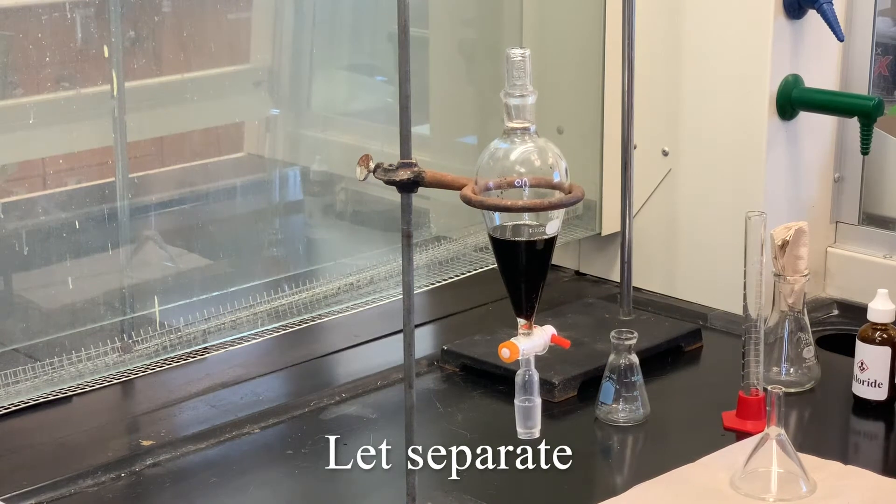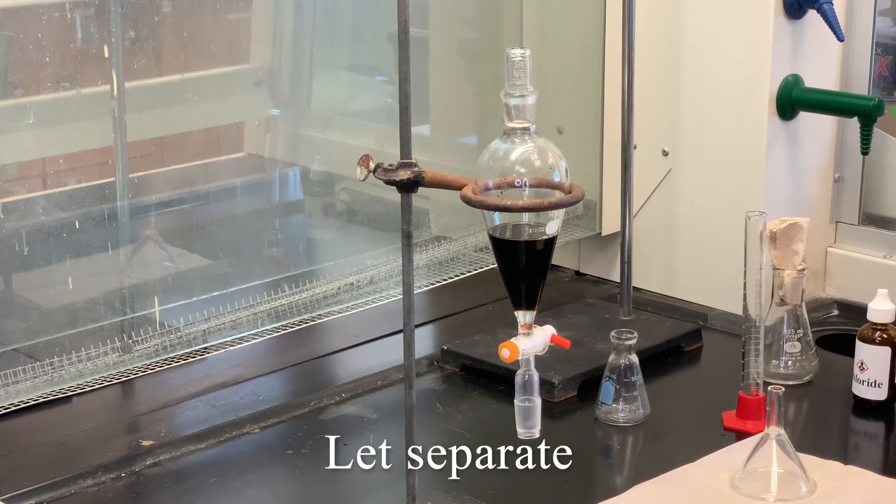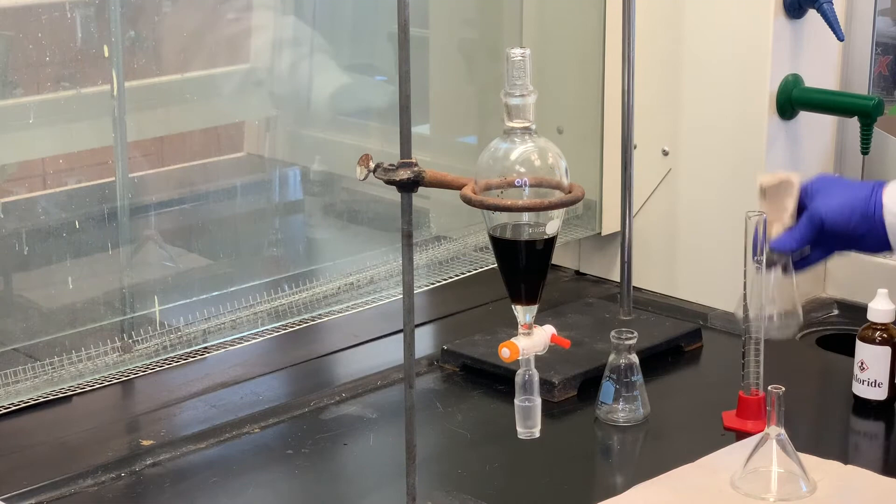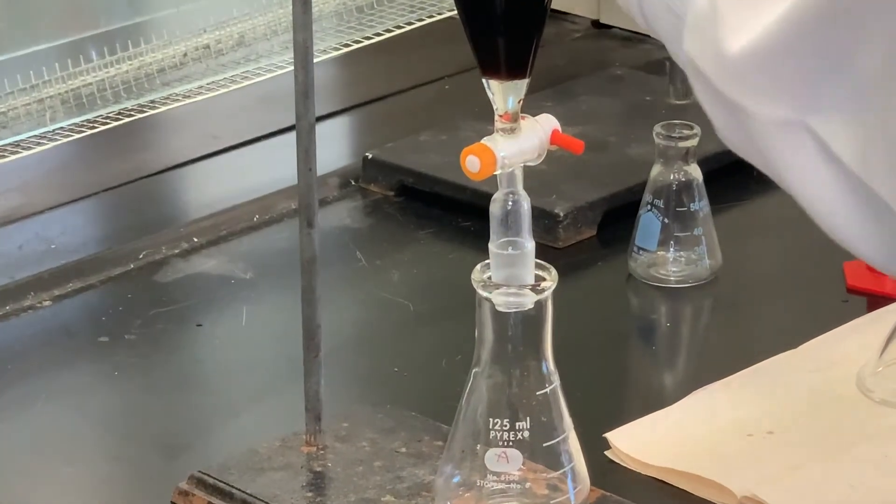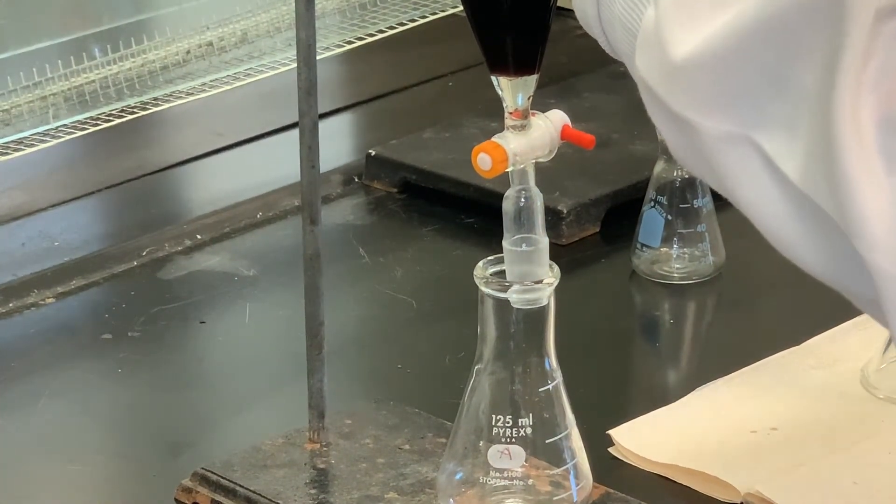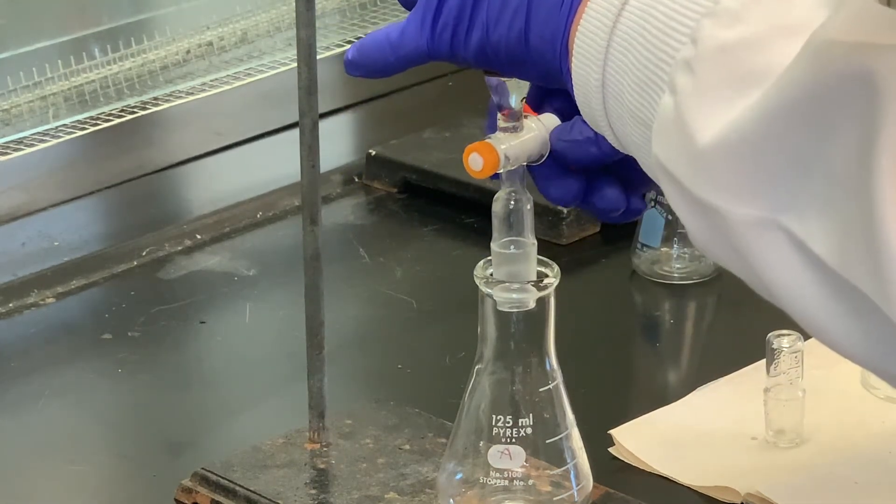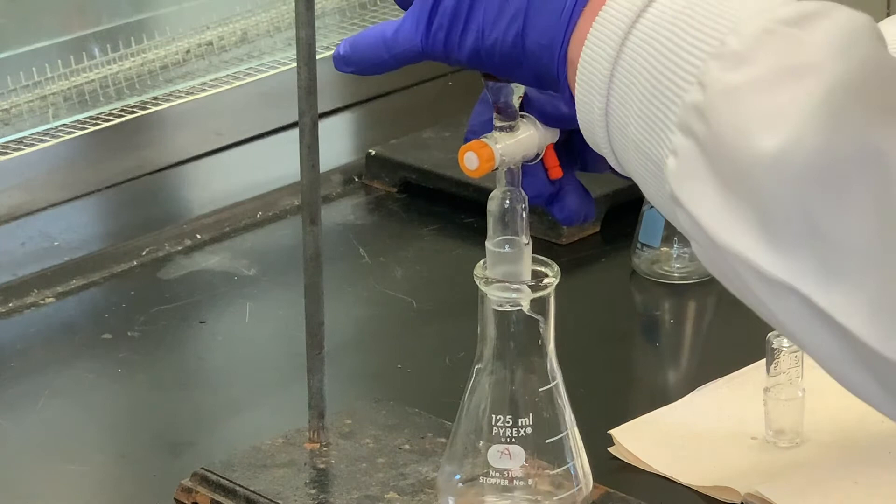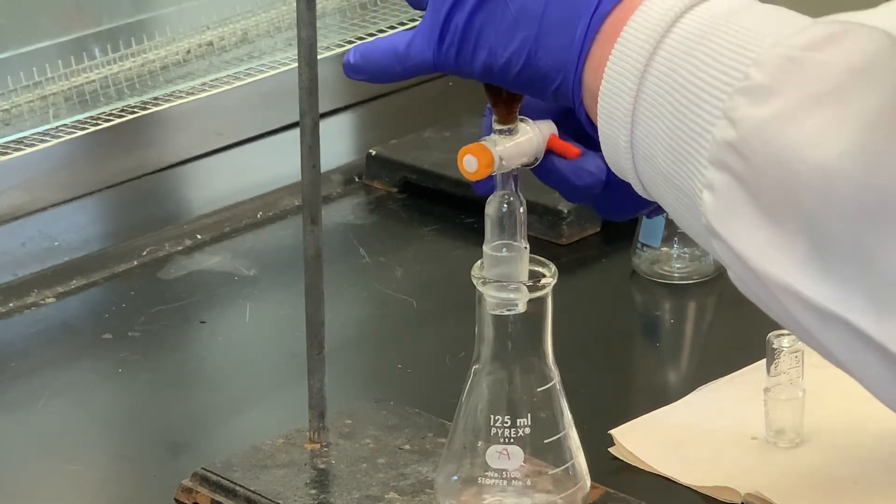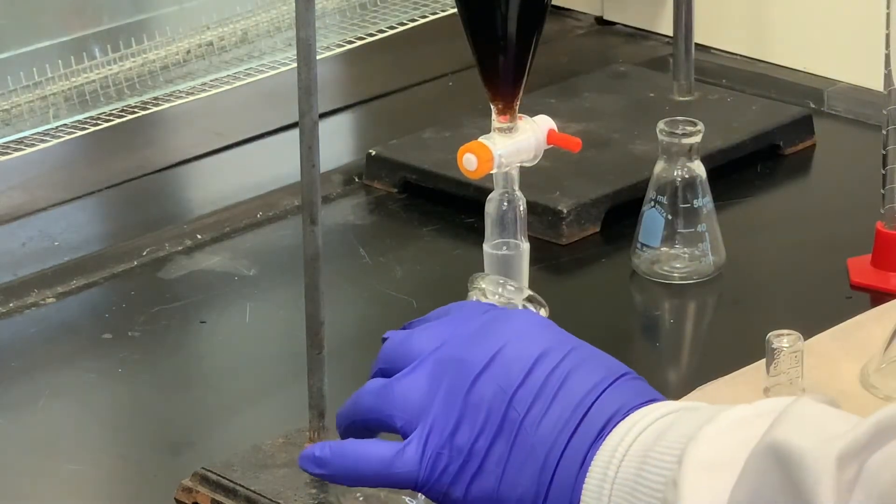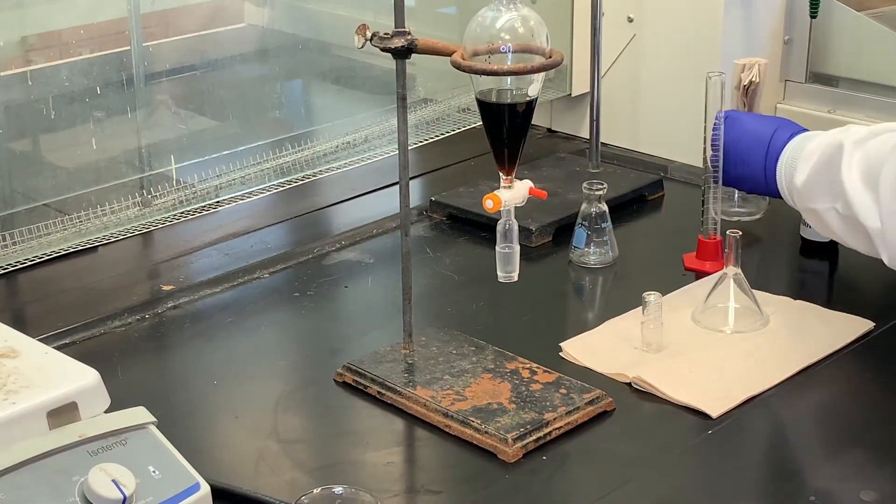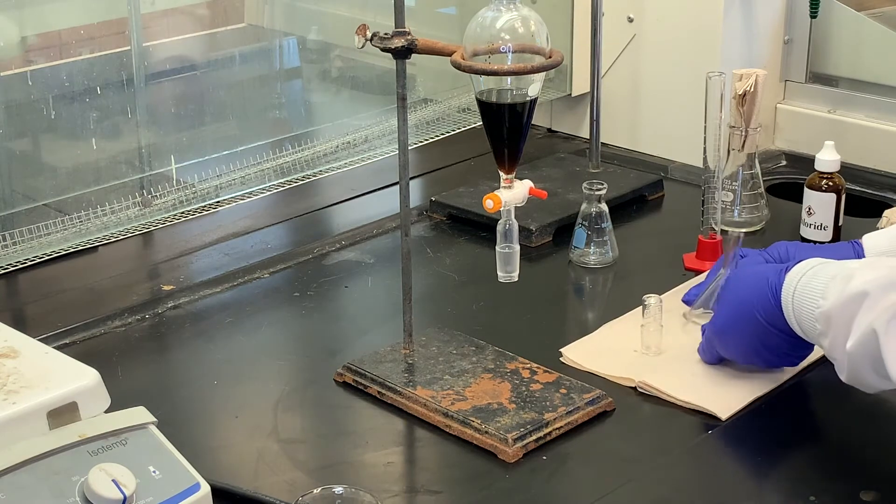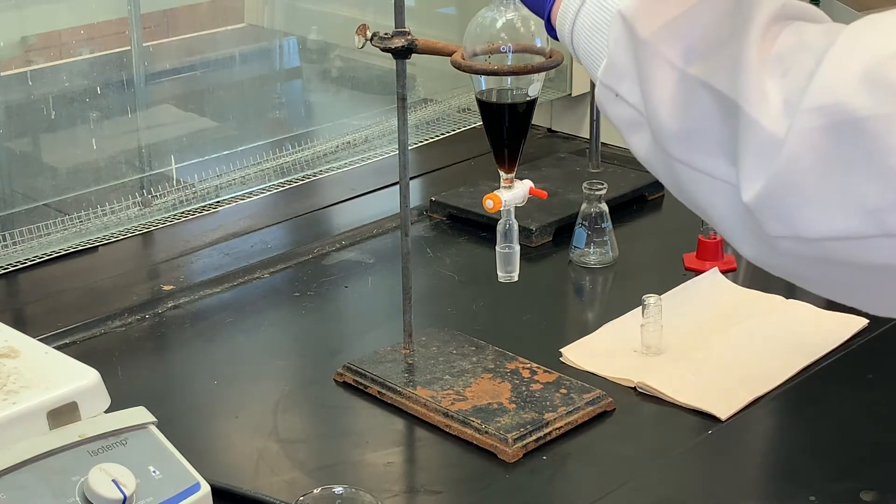Let that set so the layers can separate again. Looks like separation has occurred. I'm going to collect this material in that same Erlenmeyer flask I used previously. Remove the stopper, and then drain that. Notice that I left just a little bit of that methylene chloride solution there. I'm going to add another five to ten mils of the methylene chloride.